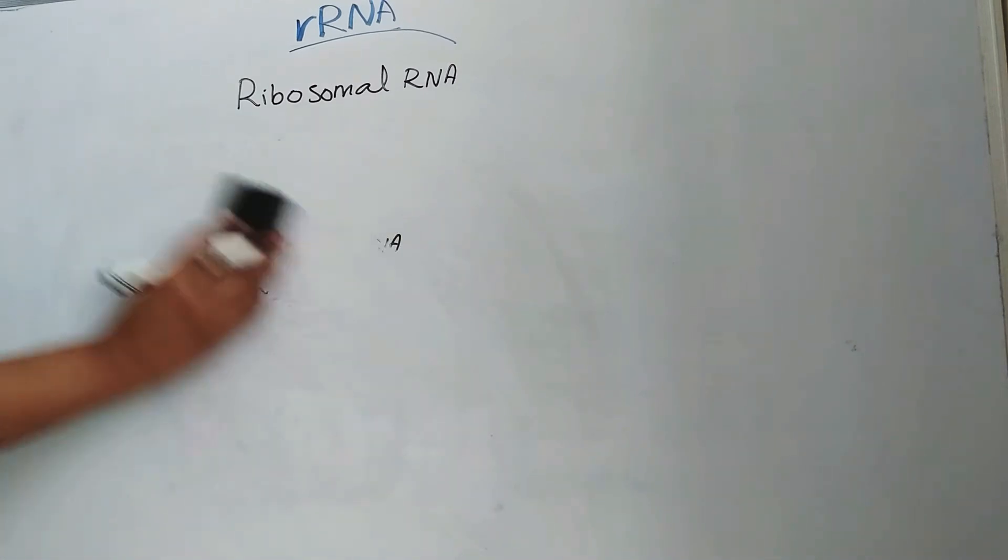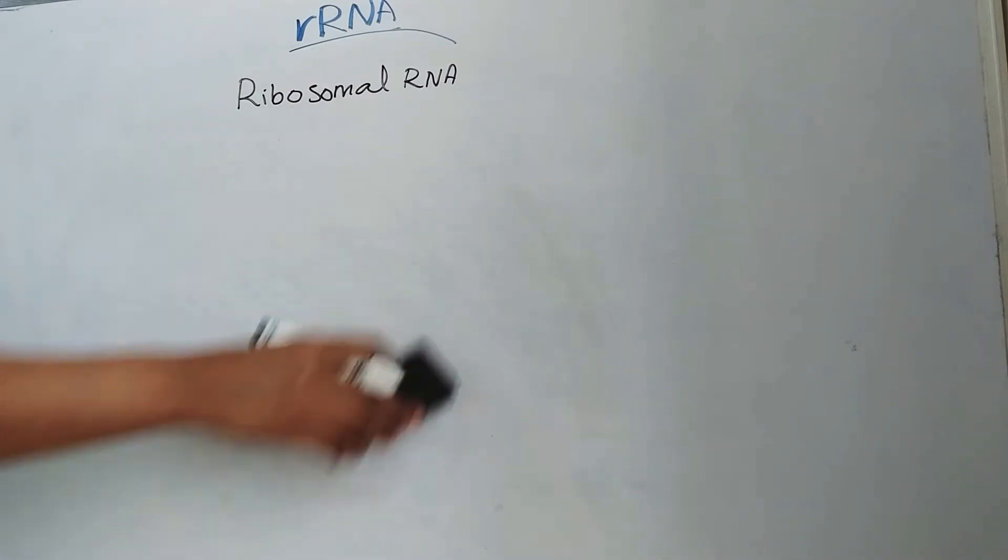The ribosome is composed of a small subunit and a large subunit.